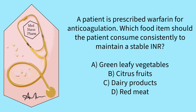A is correct. Consistent intake of vitamin K rich foods such as green leafy vegetables is important to maintain a stable INR while on warfarin, as vitamin K affects the blood clotting process and maintaining consistent intake helps regulate warfarin dosing. B is incorrect. Citrus fruits are not directly related to INR stability with warfarin. C is incorrect. Dairy products do not have a significant impact on INR stability with warfarin. D is incorrect. Red meat is not directly associated with INR stability; the focus is on vitamin K rich foods like green leafy vegetables.